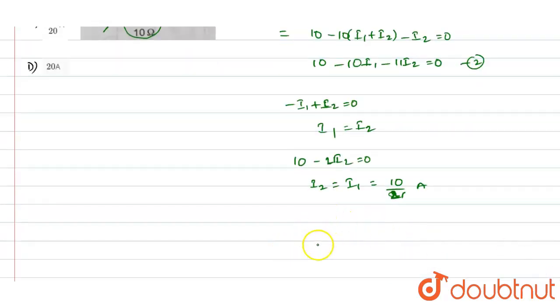So current in the 10 ohm resistor will be equals to i1 plus i2, so that will be equals to 20 divided by 21 amps. So this is the correct answer.